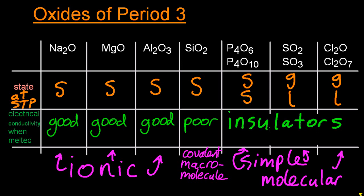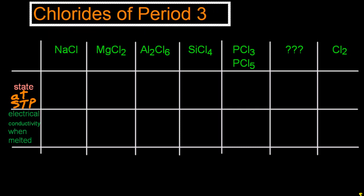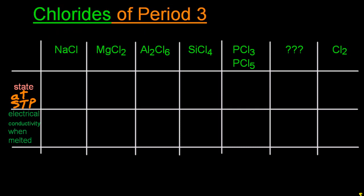Moving on to the chlorides of period three. A lot of it's very similar ideas here. First of all, sodium and magnesium chloride, they're ionic, so they're going to be solids.